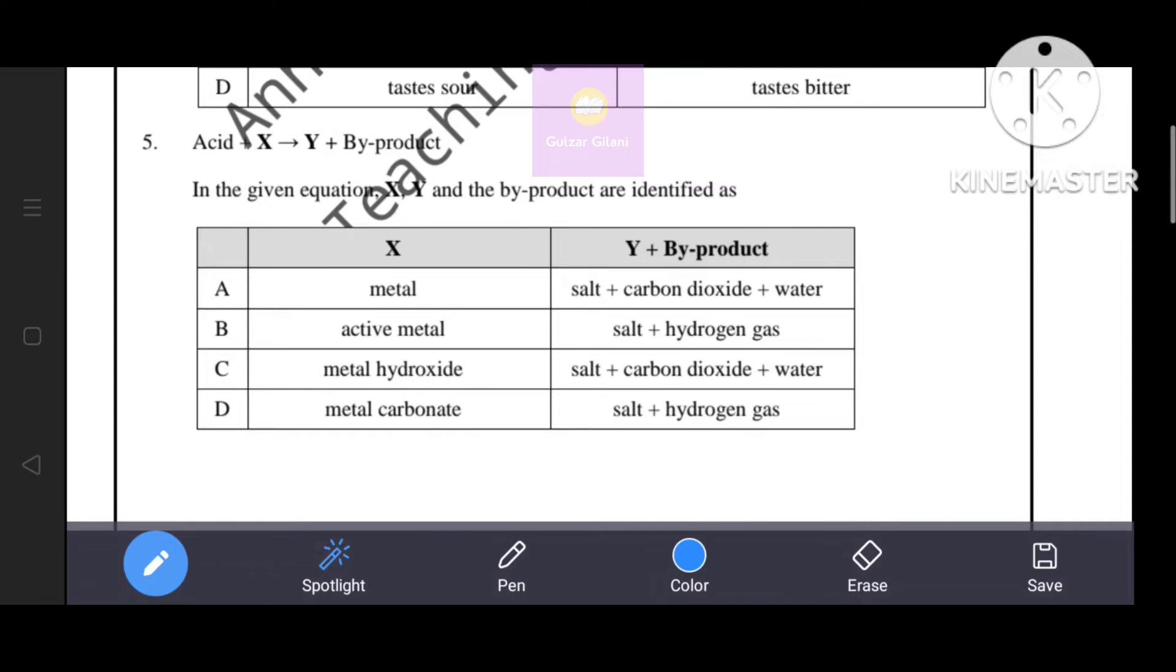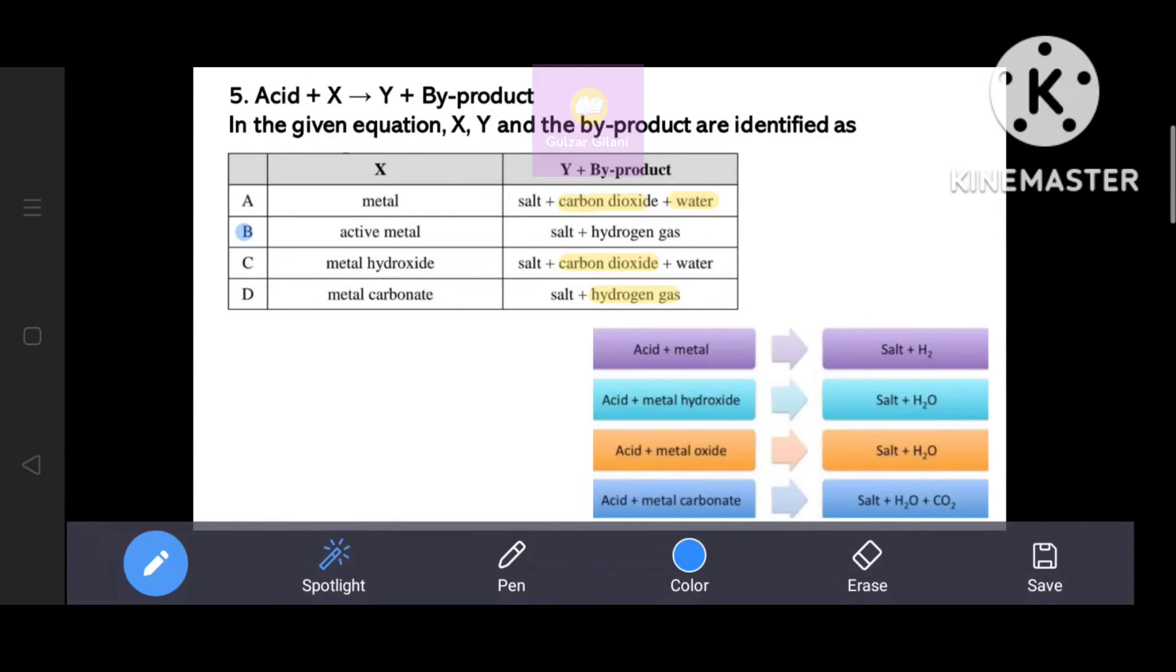Next question. Acid plus X react to form Y plus byproduct. In the given equation, X, Y and the byproduct are identified as... Acid reacts with active metal to form salt and hydrogen gas. Q correctly represents the equation. That's why option B is the correct answer.